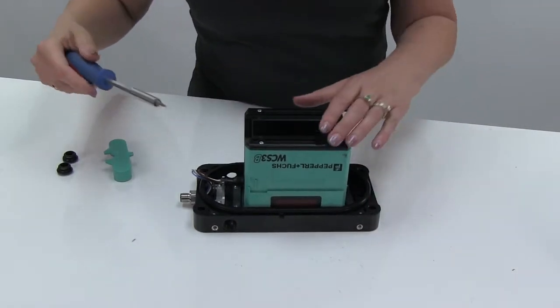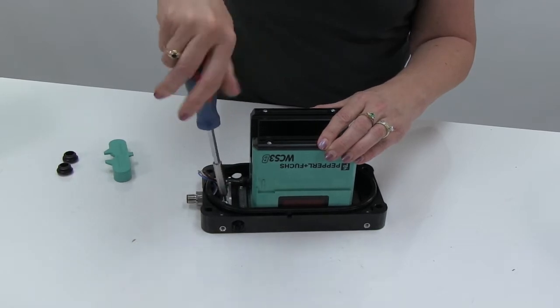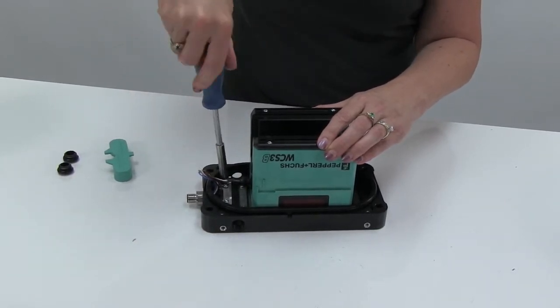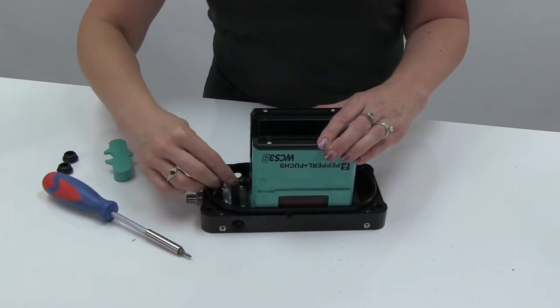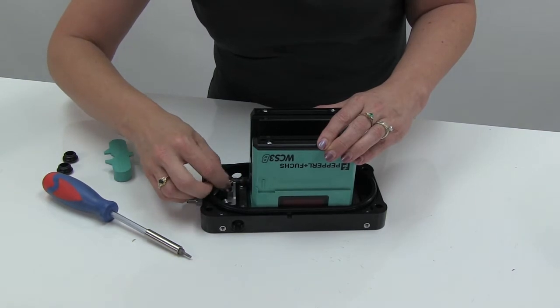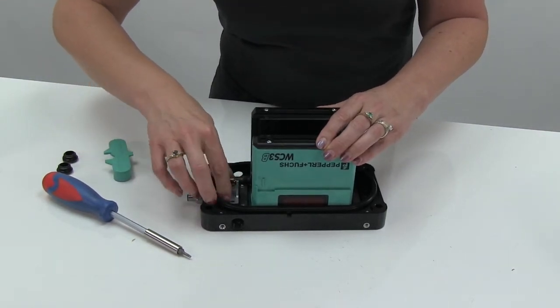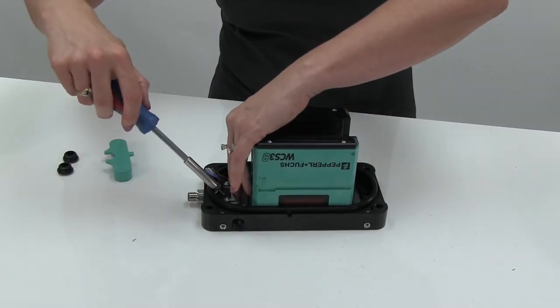The connector holder has two screws that you'll loosen up next. Line up the socket end of the connector with the keyway in your reed head. Move the connector holder toward the reed head and then tighten the screws.